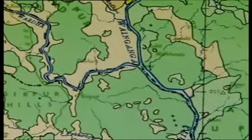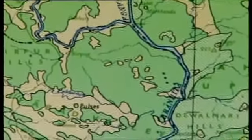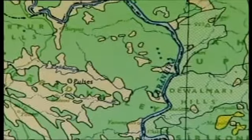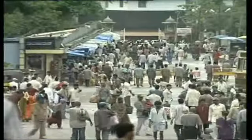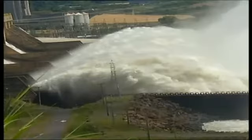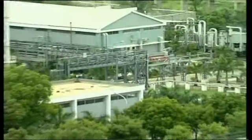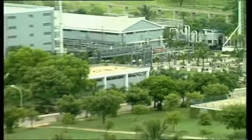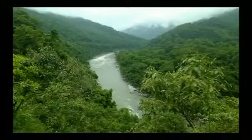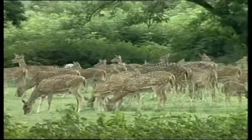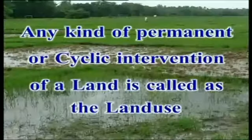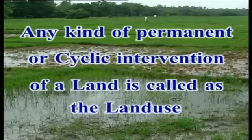Land is a valuable natural resource. Land is utilized for cultivation of crops, settlement of populations, creation of dams and reservoirs, establishment and development of industries, and maintaining forest and wildlife. Any kind of permanent or cyclic intervention of a land is called land use.